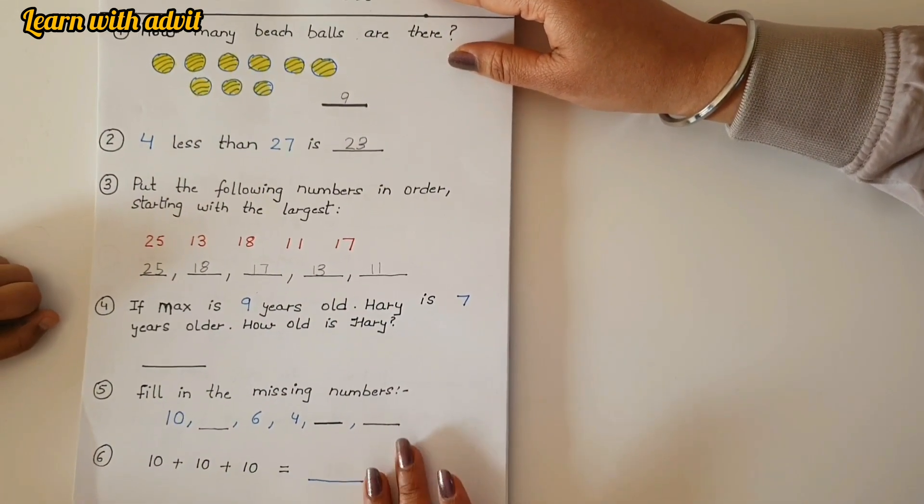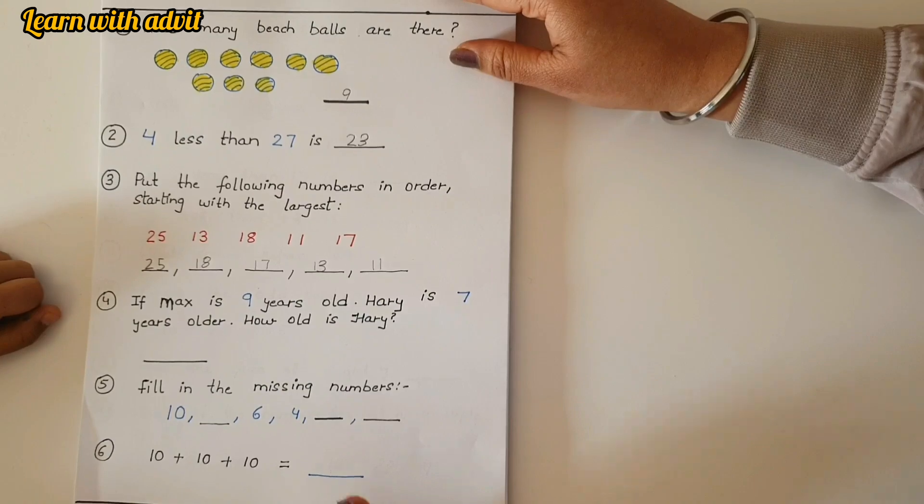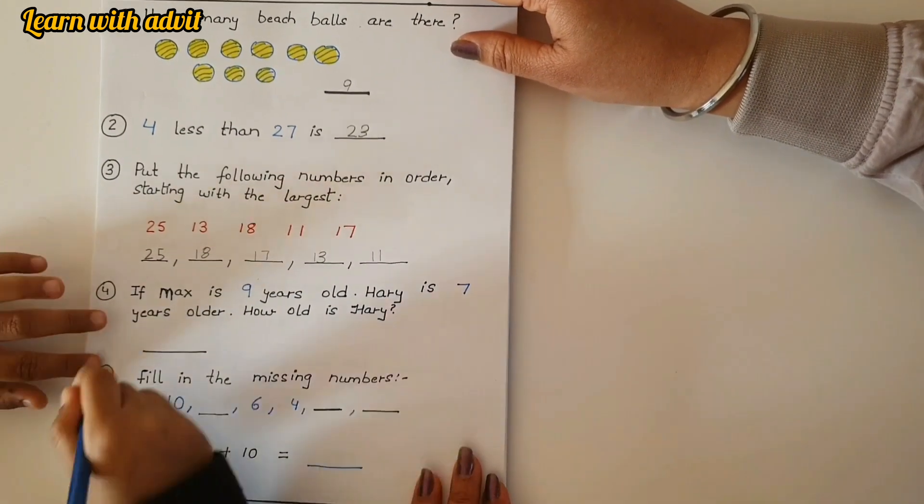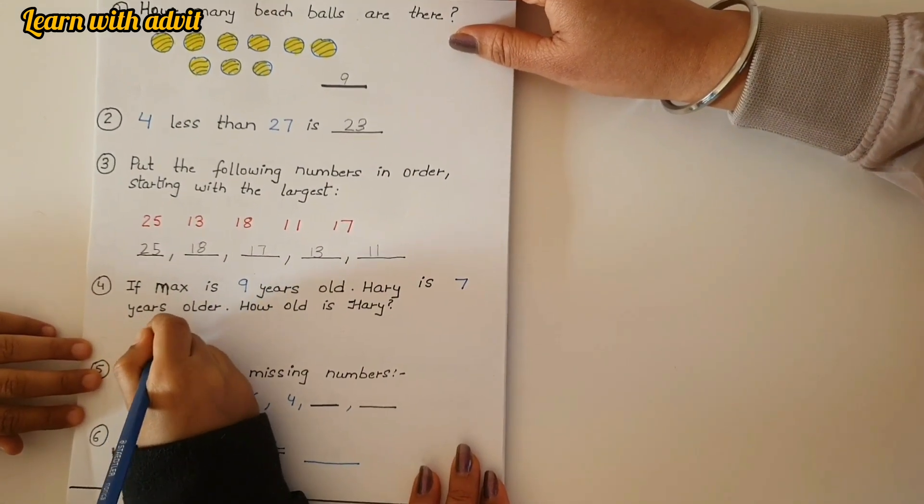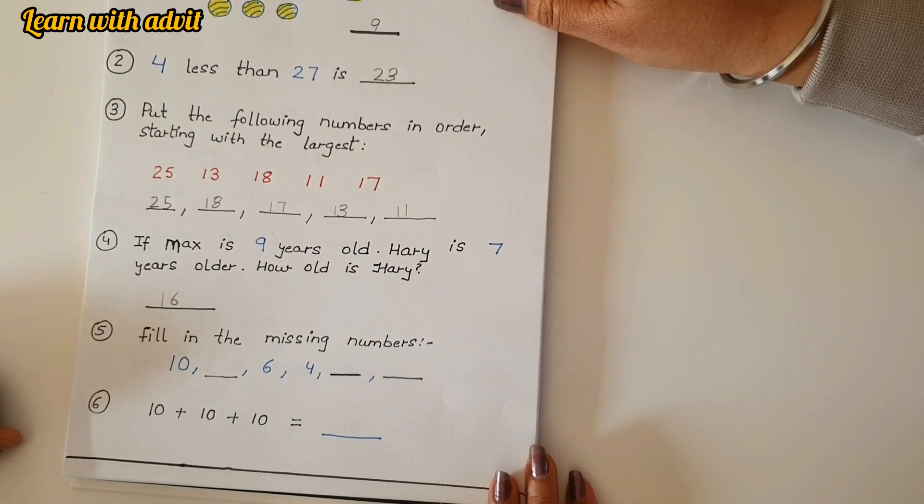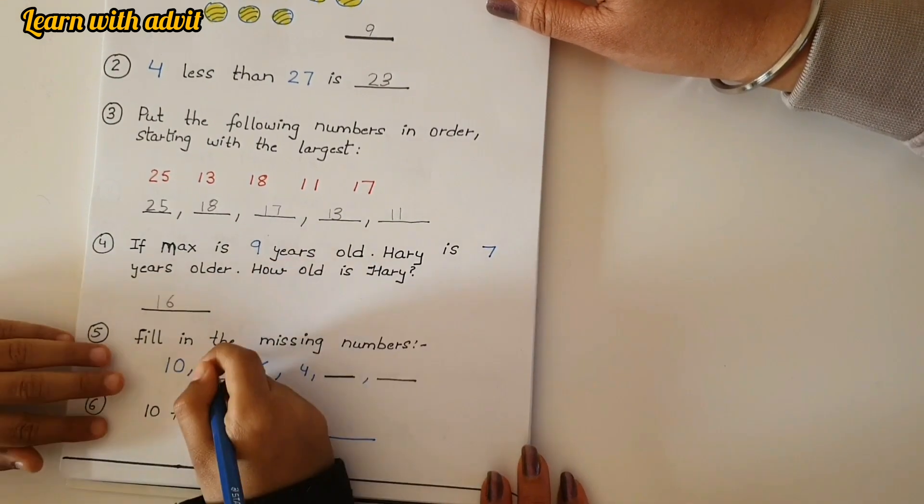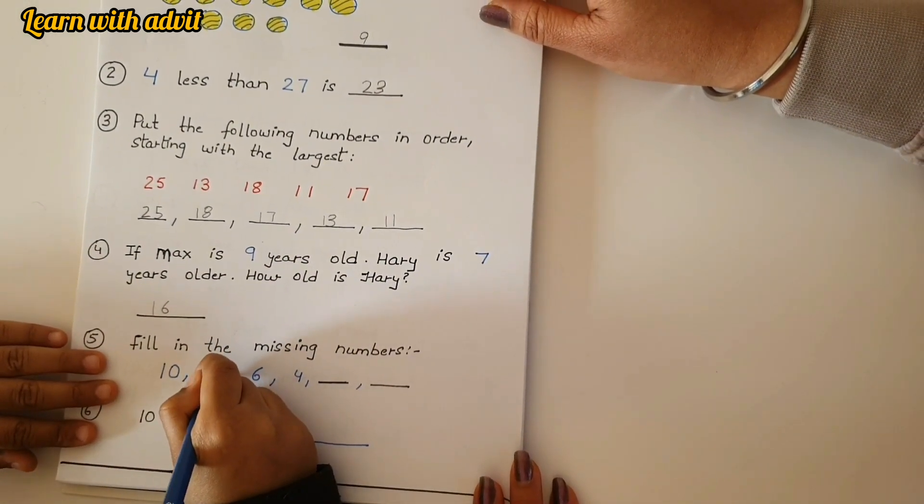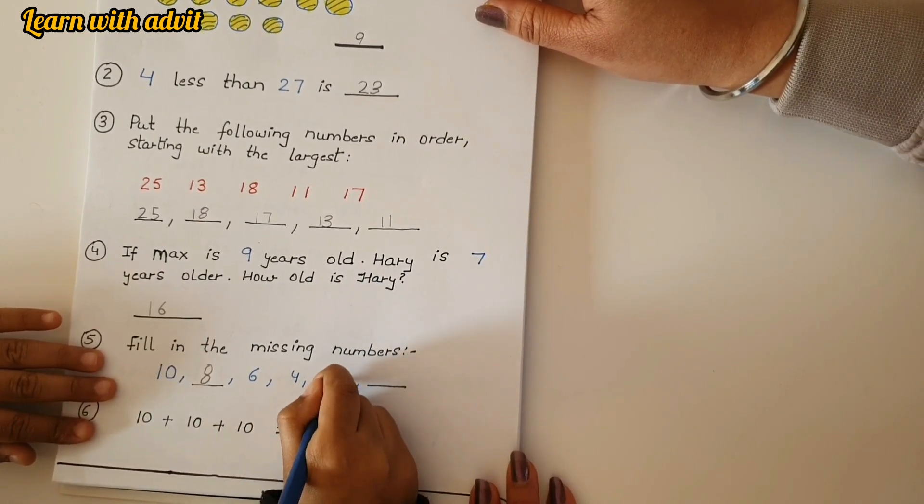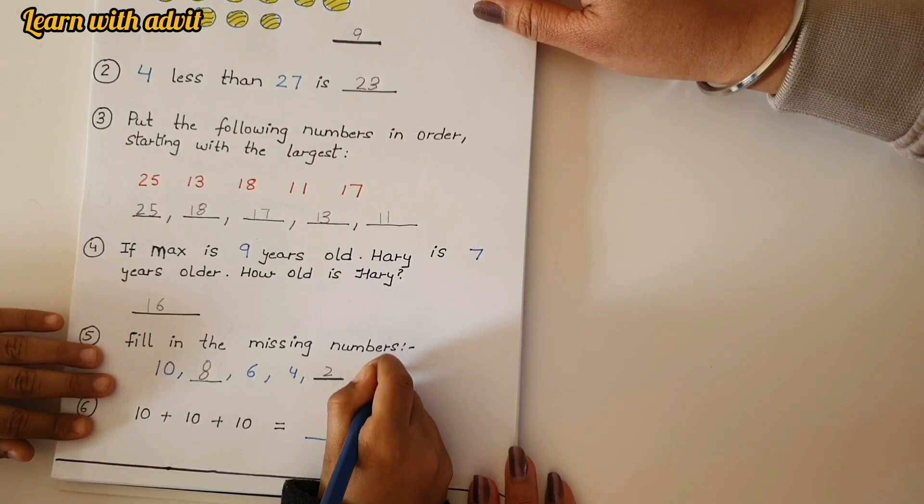If Max is nine years old, Eddie is seven years older than Max, how old is Harry? Nine plus seven equals 16. Very good. Fill in the missing numbers. Okay, counting eight, yeah, six, four, two, zero. Very good.